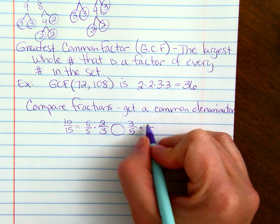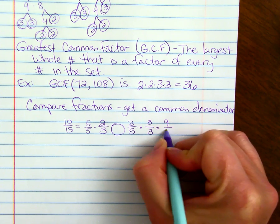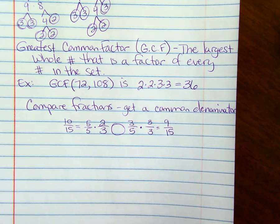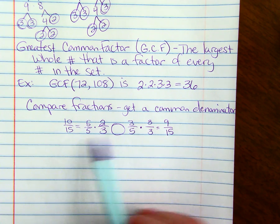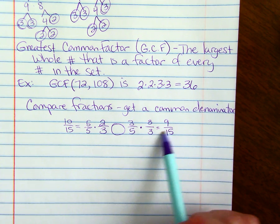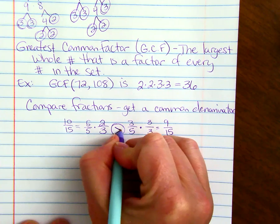If we multiply 3 fifths by 3 over 3, we get 9 fifteenths. And then we can compare numerators. 10 fifteenths is greater than 9 fifteenths. And we have a greater than sign here.